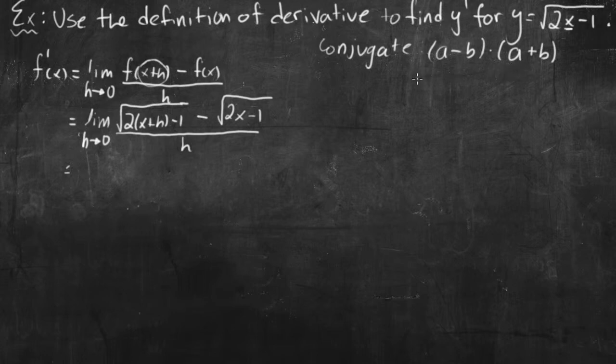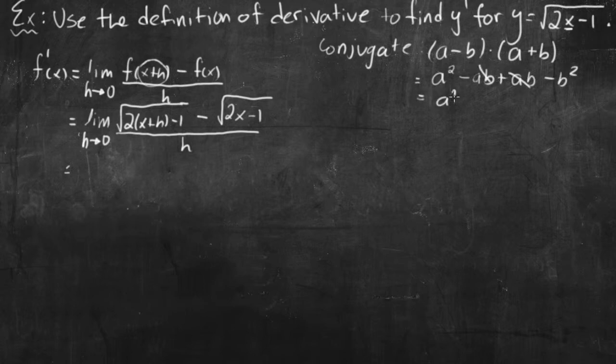So what ends up happening, if we foiled this out, I would get a squared minus b squared. It works out really nice. We don't actually have to go through the process of foiling it, but that's what happens. The middle terms actually cancel. We would get negative ab and plus ab, then a squared and minus b squared. These would cancel, and I'd be left with a squared minus b squared. So that's useful, and I'll show you how it's useful.